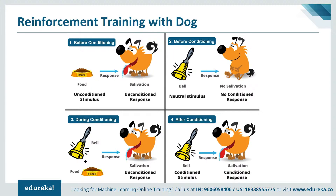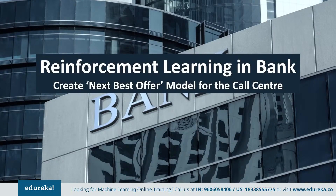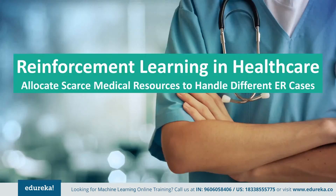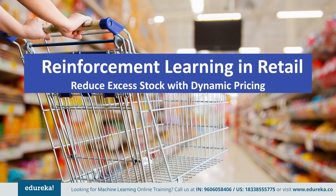Now let's see how reinforcement learning is applied in banking, healthcare, and retail. In the banking sector, it is used to create a next-best-offer model for a call center by building a predictive model that learns over time as users accept or reject offers made by sales staff. In the healthcare sector, it is used to allocate scarce medical resources for different types of ER cases by building a Markov decision process that learns treatment strategies for each ER case type. In the retail sector, it is used to reduce excess stock with dynamic pricing by building a model that adjusts prices based on customer response to offers.